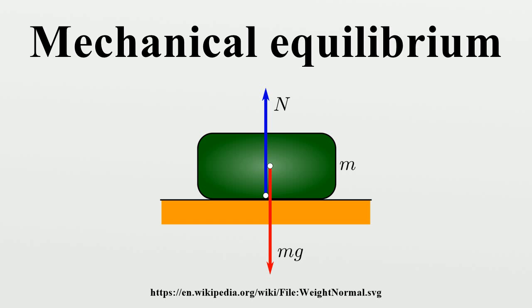If more than one stable equilibrium state is possible for a system, any equilibria whose potential energy is higher than the absolute minimum represent metastable states.